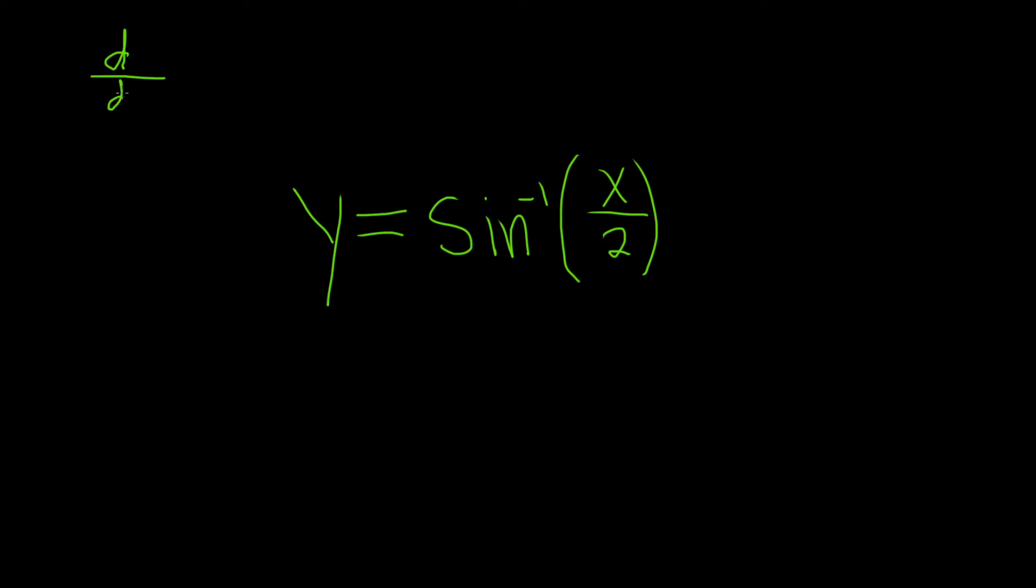If you take the derivative with respect to x of the inverse sine of x, this is equal to 1 over the square root of 1 minus x squared.